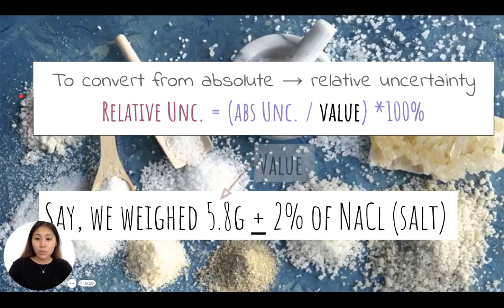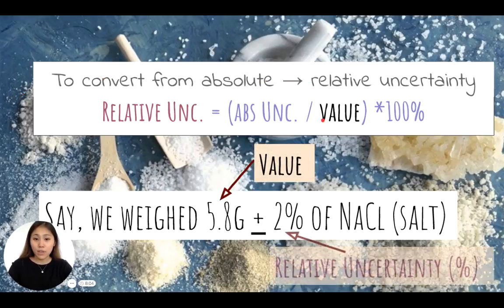So we know 5.8 grams is the value. We know two percent is the relative uncertainty.